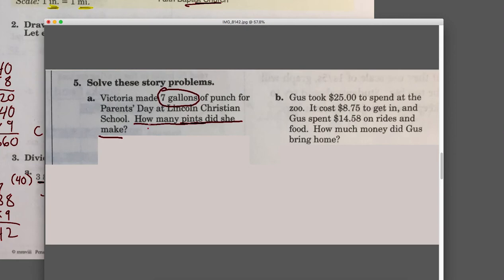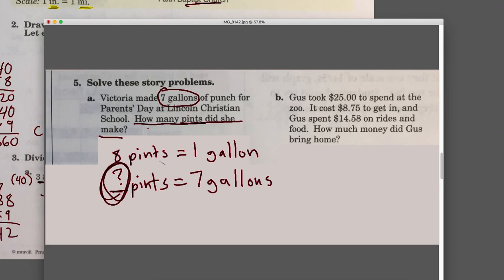If you remember, eight pints equals one gallon. You're trying to figure out how many pints she made. If we know that she made seven gallons, how many pints is that? That's what you're trying to figure out. What do you think you need to do? Is it minus, add, multiply, or divide? I'll let you guys figure that out.